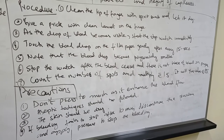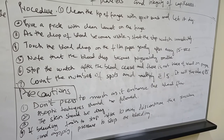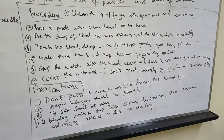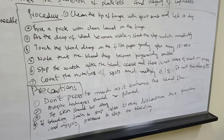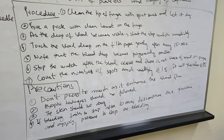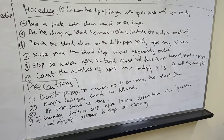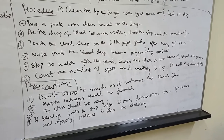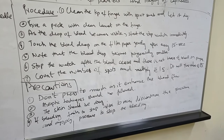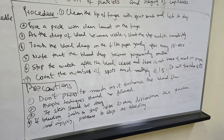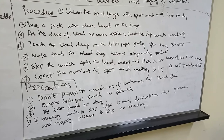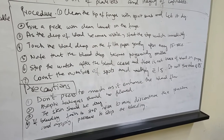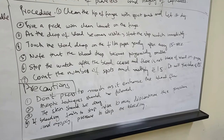Apply a drop of blood on the filter paper after every 15 seconds. Note that the blood drop becomes progressively smaller. Stop the watch after the blood ceases and there is no trace of blood on the paper. Count the number of spots and multiply by 15 — this will give you the value of bleeding time.